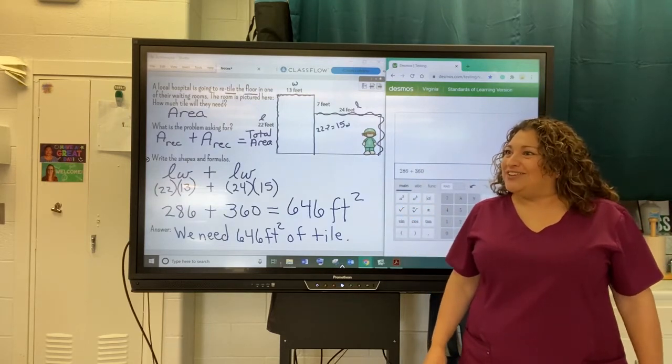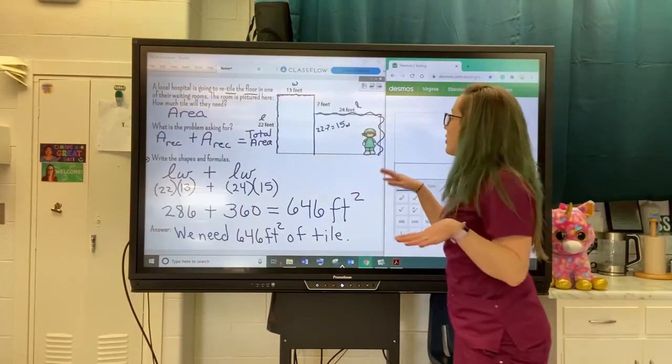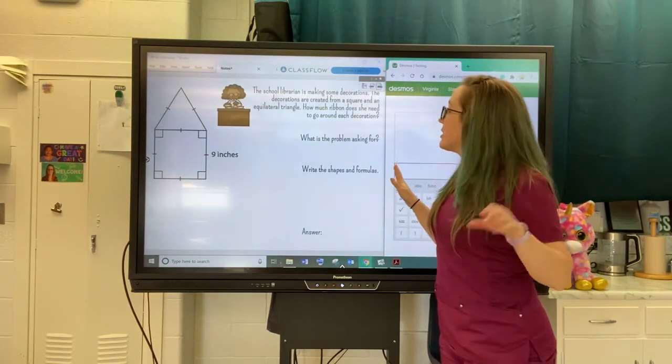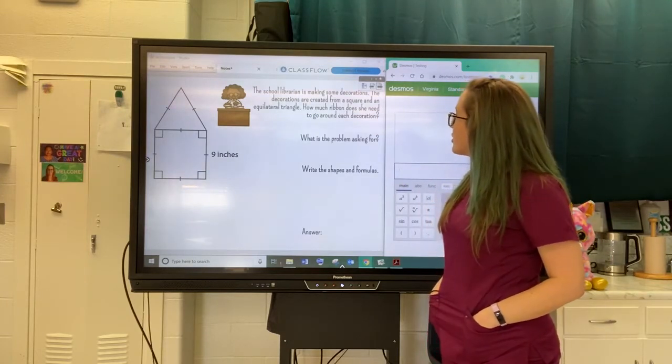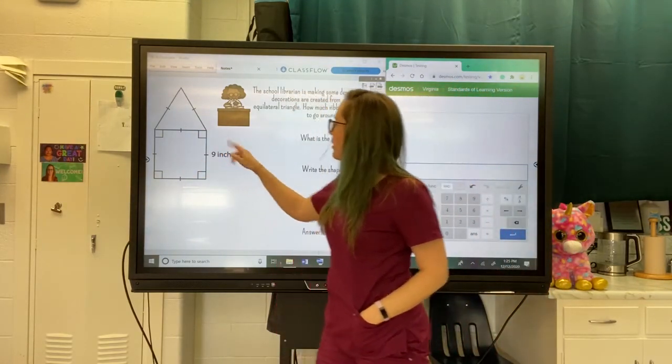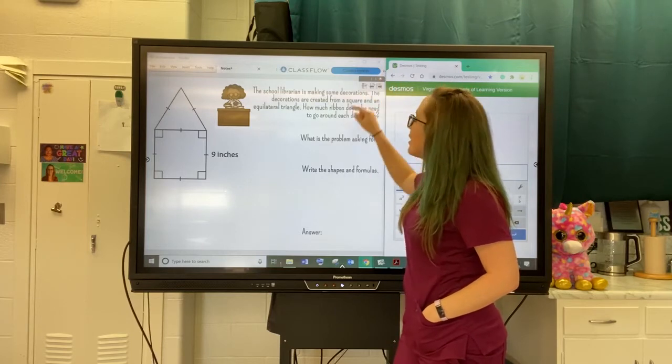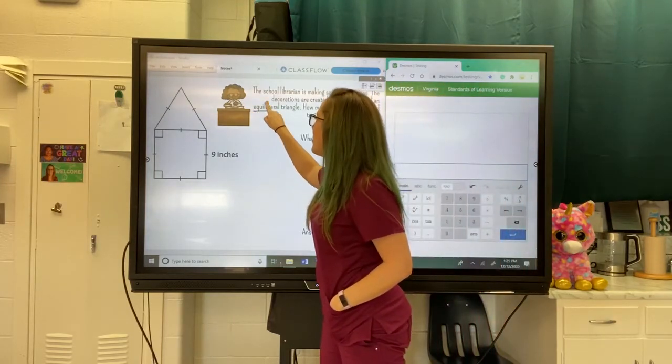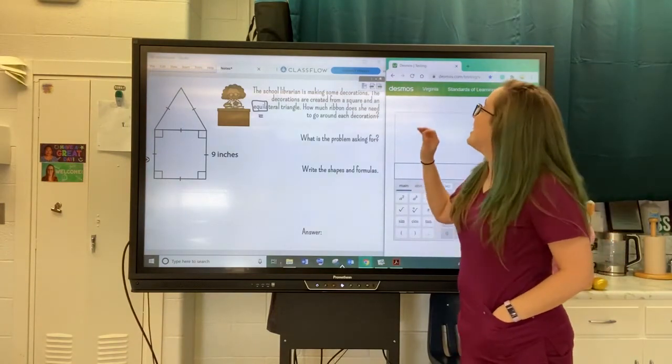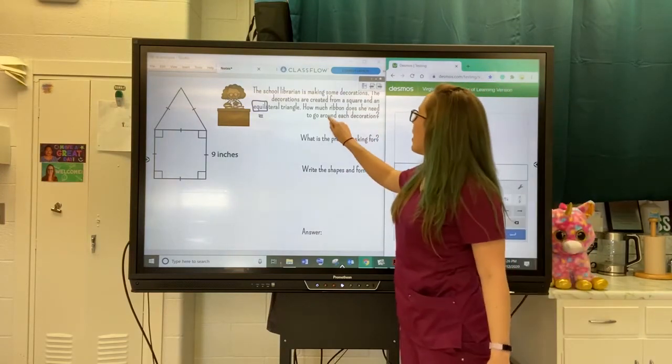All right, Miss Benson, are you ready? I'm ready, let's get it again. Okay, let's see what the next one looks like, because all of these are super different from each other, which is why you just got to kind of hang in there and watch them all. Right, this shape looks totally different. It says the school librarian is making some decorations. The decorations are created from a square and an equilateral triangle, which is a very fancy way of saying that all of the sides are equal. If she's making these decorations, how much ribbon does she need to go around each decoration? So if I am going around, that means that I am looking for perimeter.